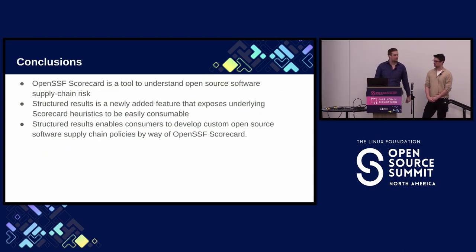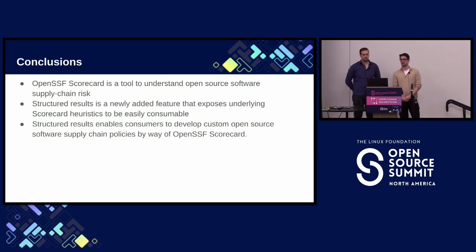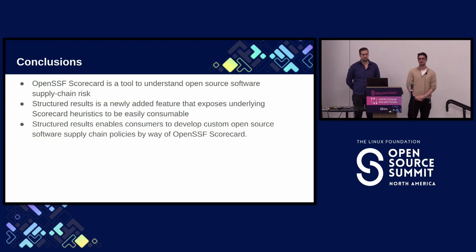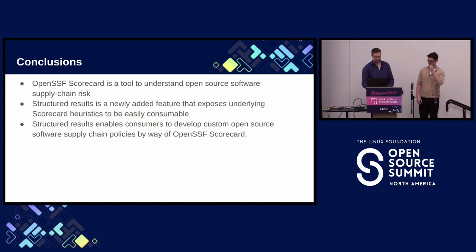Conclusions: Scorecard is a tool to understand open source supply chain software security risks. Structured results is a newly added feature. The whole goal is to expose all the underlying analyses done in Scorecard so that consumers can adjust them to their own needs. The analyses are very powerful, but the checks only give one opinionated view of them. The goal is to make Scorecard a lot more usable by exposing many more different use cases — in this case, different policies. Thank you very much, everybody.